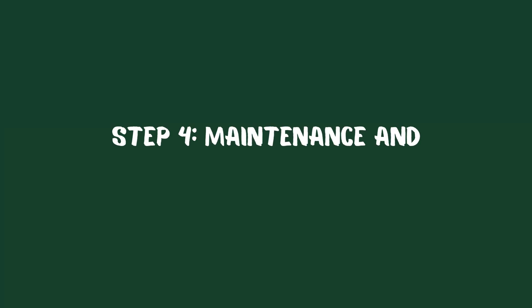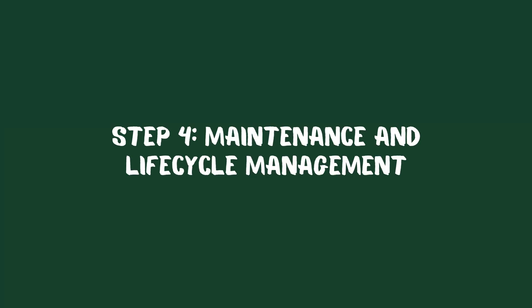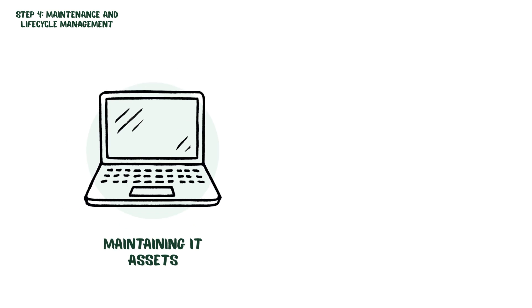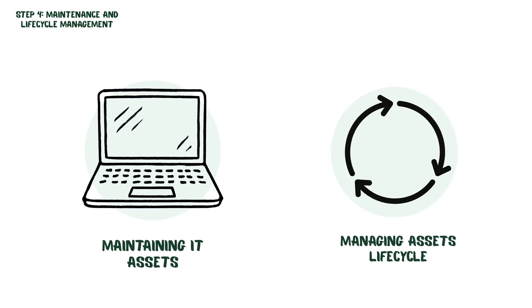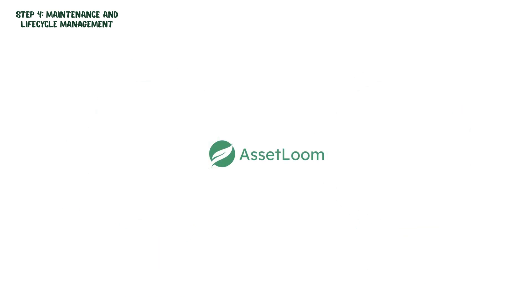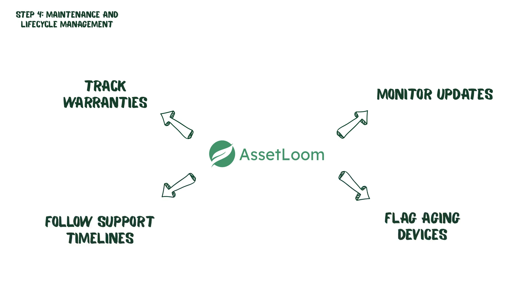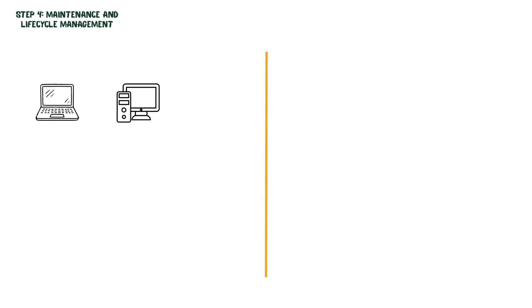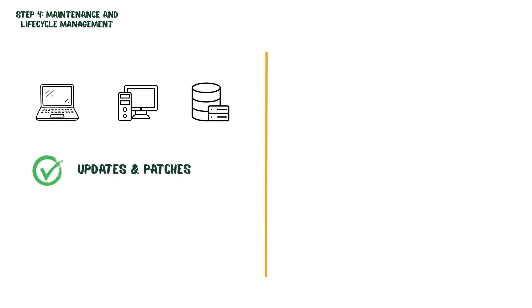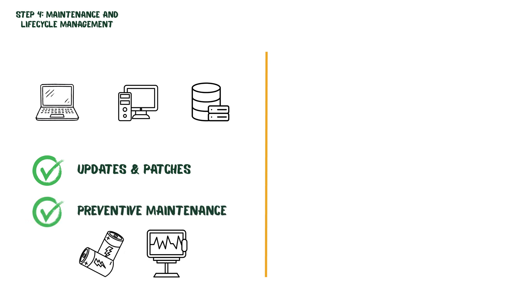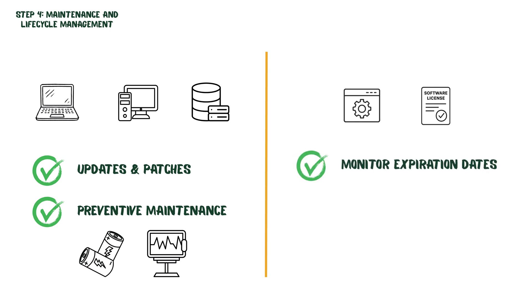Step 4: Maintenance and Lifecycle Management. This step is about maintaining your IT assets and managing their lifecycle. Asset Loom helps you monitor warranties, updates, and support timelines, and flags devices that are nearing the end of their life. For hardware like laptops, desktops, or servers, this could mean regular updates, patches, or preventive maintenance such as checking batteries or running system diagnostics. For software and licenses, it means monitoring expiration dates, applying updates, and planning renewals.